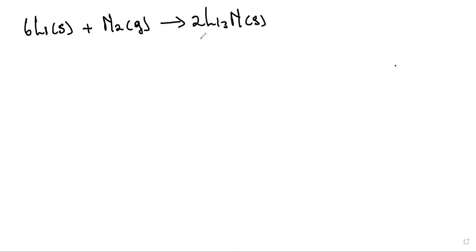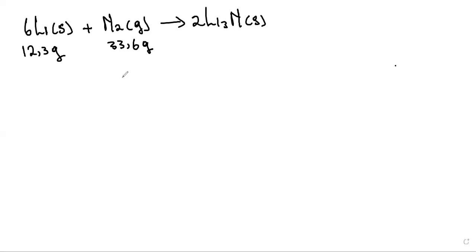Let's consider this reaction: 6 moles of lithium reacting with 1 mole of nitrogen gas to produce 2 moles of lithium nitride. We have 12.3 grams of lithium and 33.6 grams of nitrogen gas, and we need to determine the limiting reagent. The limiting reagent is the reactant that is used up first during a chemical reaction, and it's important because it determines the amount of product that will be formed.